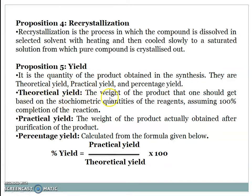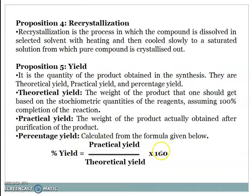Theoretical yield: the weight of the product that one should get based upon stoichiometric quantity of the reagent, assuming 100% completion of the reaction. Practical yield: the weight of the product actually obtained after purification. Percentage yield: it can be calculated from the formula — percent yield equals practical yield divided by theoretical yield, multiplied by 100.